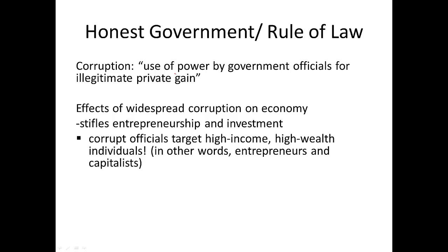Corrupt government officials are going to go after people with money — high incomes and wealth. In a market economy, who are those people going to be? In the US, around 80% of millionaires are first-generation millionaires — they didn't inherit their wealth. If they didn't inherit it, where did they get it? They got it from being entrepreneurs, building businesses, and providing lots of value to other consumers in the economy.